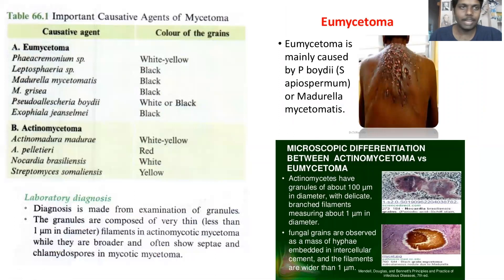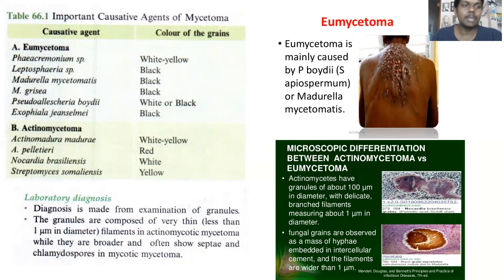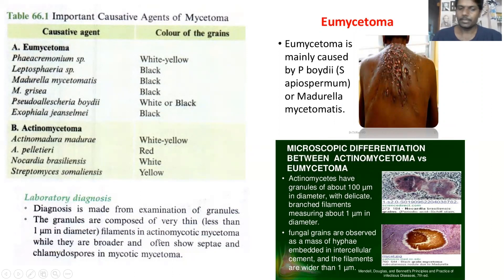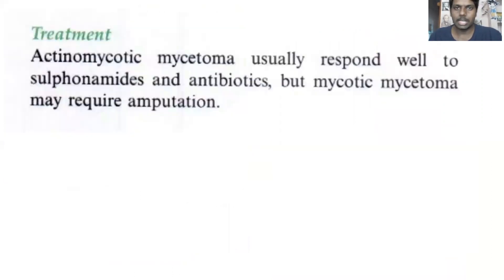There are two types of Mycetoma infections: Eumycetoma and Actinomycetoma. Eumycetoma is caused by Madurella mycetomatis, which secretes black color granules, whereas Actinomycetoma is caused by Actinomadura madure. Laboratory diagnosis is made from examination of granules — the granules are composed of very thin, one micrometer in diameter filaments, which sometimes show septa. Treatment for Mycetoma involves sulfonamides and antibiotics.